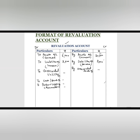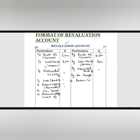Then we compare both the debit and credit sides. If the credit side is more than the debit side, we have a gain — this gain is transferred to the partners' capital accounts. If the debit side is more than the credit side, we have a loss — the loss is transferred to the partners' capital accounts or current accounts. Either way, the gain or loss allows us to close this account.